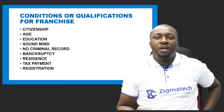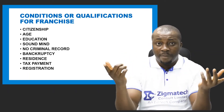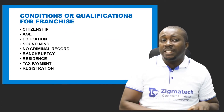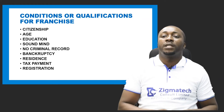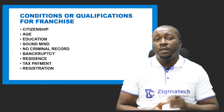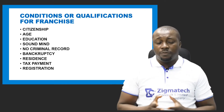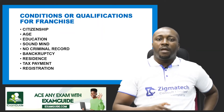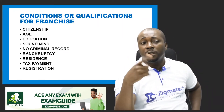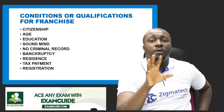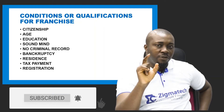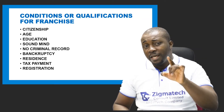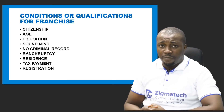Now let's look at the conditions or qualifications for franchise. Number one is citizenship — you must be a citizen of that country because it is a civic right. Two, age — you must be of the required age. Most countries specify 18 years to vote, while the age to be voted for depends on the office: some countries require 40 years to become president and 35 years for governor. Education is also a condition in most cases for contesting, and most countries specify the educational qualification you must meet to contest for a particular office.